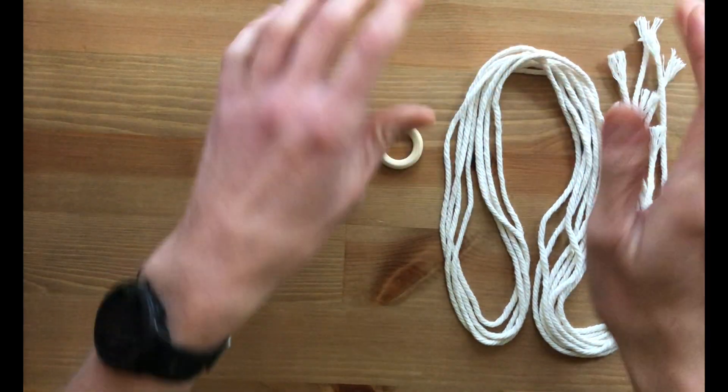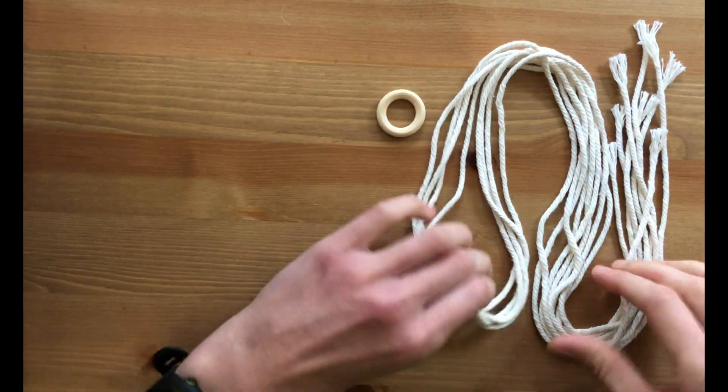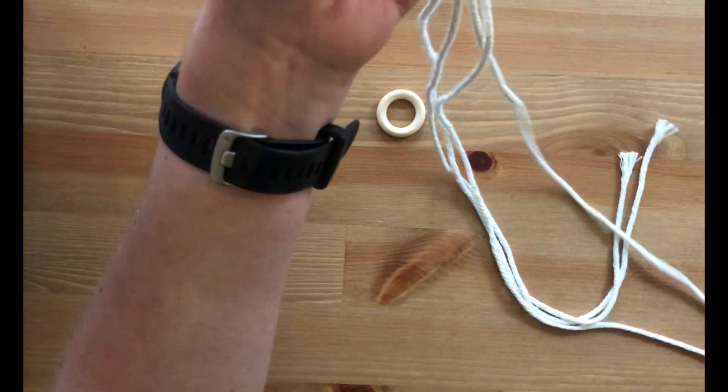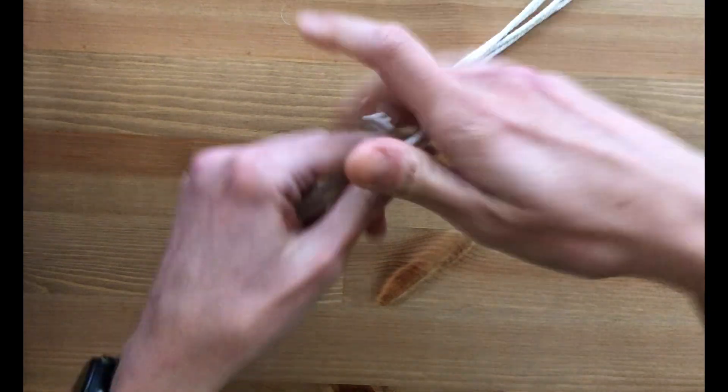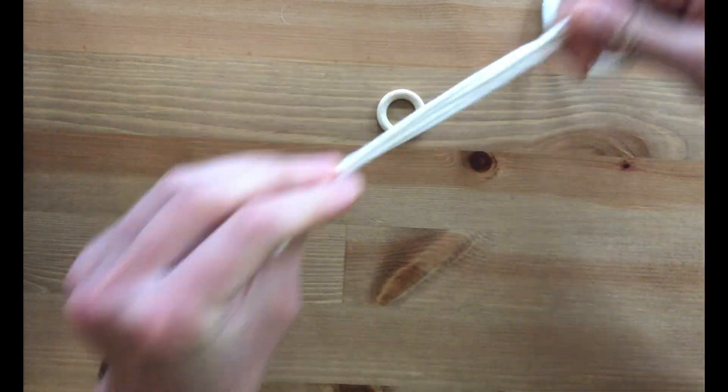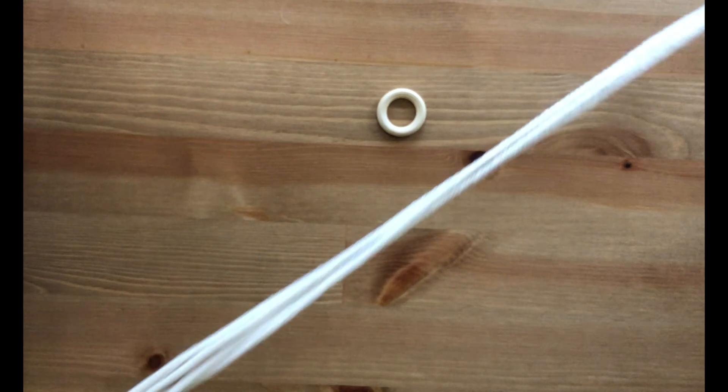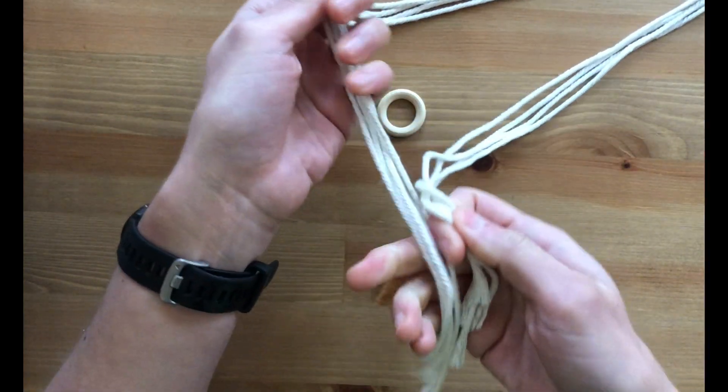So to get started, we're going to put the cord onto the ring. Gather the four strands together so that they're all lengthwise together, and then fold them in half.